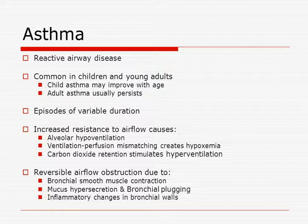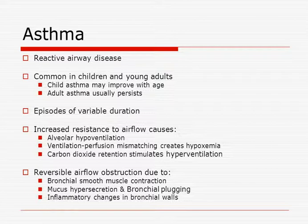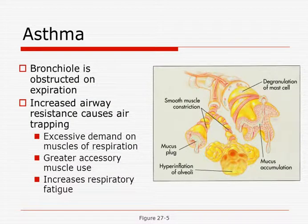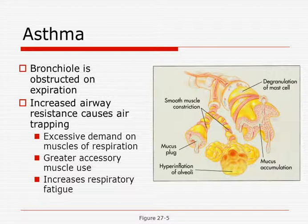Asthma is a restrictive airway disease, common in children and young adults. Child asthma may improve with age; adult asthma usually persists. They have episodes of variable duration with increased resistance to airflow, causing alveolar hypoventilation, ventilation-perfusion mismatch, and increased hypoxemia. Carbon dioxide retention stimulates hyperventilation. The reversible airflow obstruction is due to bronchial smooth muscle contraction, mucus hypersecretion, bronchial plugging, and inflammatory changes. The bronchiole is obstructed on expiration — they don't have trouble getting air in, they have trouble getting it out. This causes air trapping, excessive demand on respiratory muscles, greater accessory muscle use, and increased respiratory fatigue.